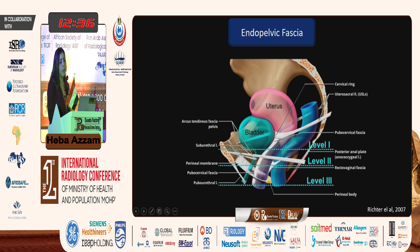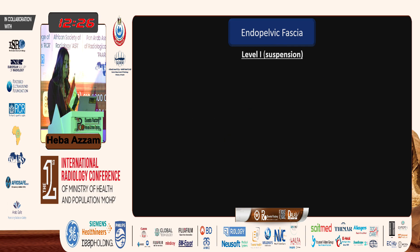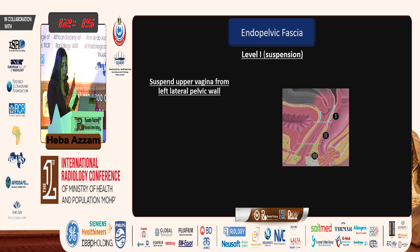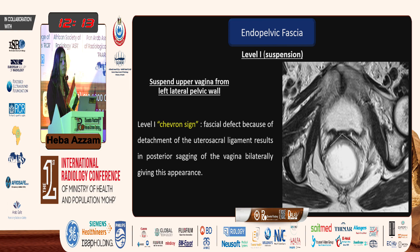There is another classification by DeLancey that helps us detect the level of fascial defect on MRI. The fascia is classified into three levels. Level one is called the level of suspension, referring to the upper portion of the vagina, which is suspended by the uterosacral and cardinal ligaments from the lateral pelvic wall. The defect at this level is seen as posterior sagging of the vagina bilaterally, due to detachment from the uterosacral ligaments, causing an appearance called the chevron sign.